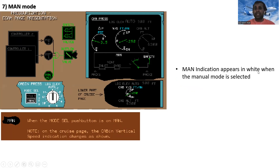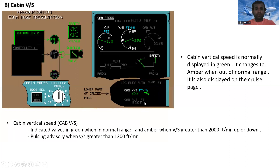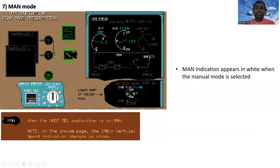In manual mode, the MAN indication appears in white when the manual mode is selected. On the cruise page, when the mode selector push button is set to manual, the cabin vertical speed indication changes its appearance — the display format differs from normal automatic mode.